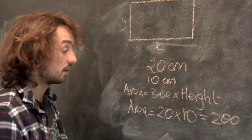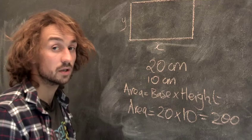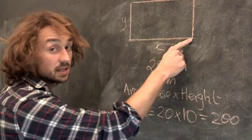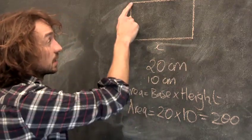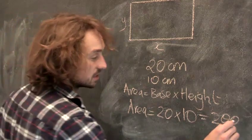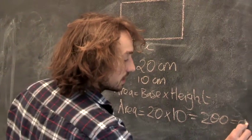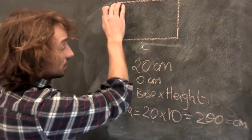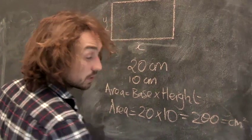Now the last thing, when you measure area, you've always got to give it in the right unit. We measured that length there in centimetres, and that length there in centimetres. So that means this is 200 centimetres squared, because we squared it.